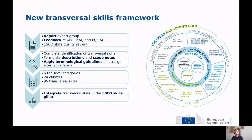At the second level, each category is divided into different clusters, for a total of 24 clusters that you can see in the diagram on the right. Finally, at the third level, a total of 96 transversal skills terms is placed under each cluster. This corresponds to the final set of transversal skills part of ESCO.